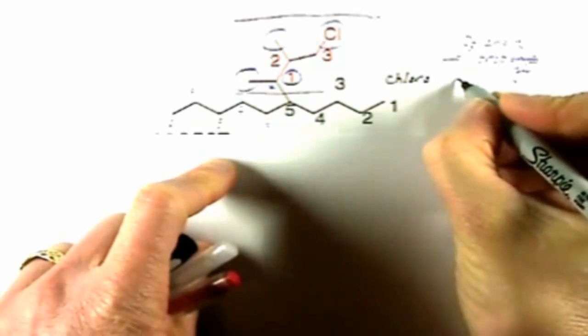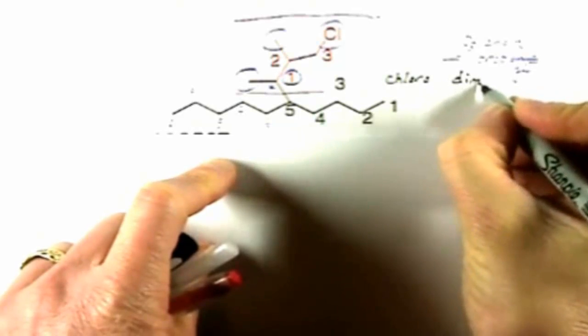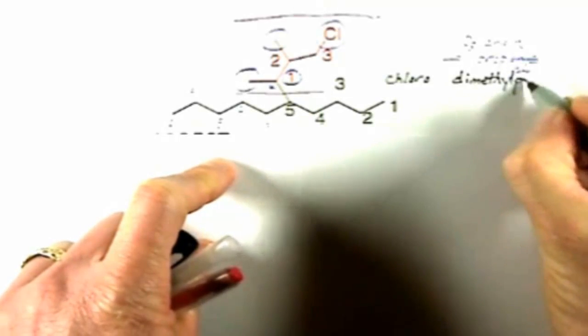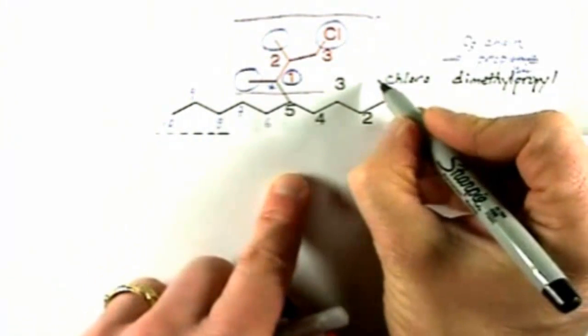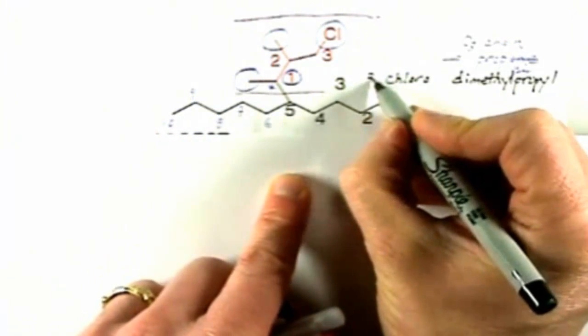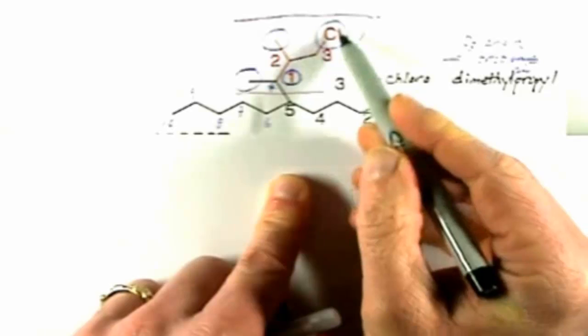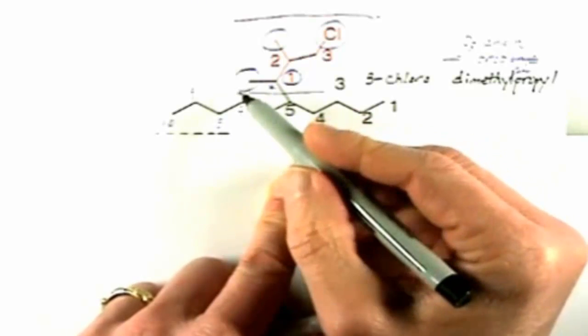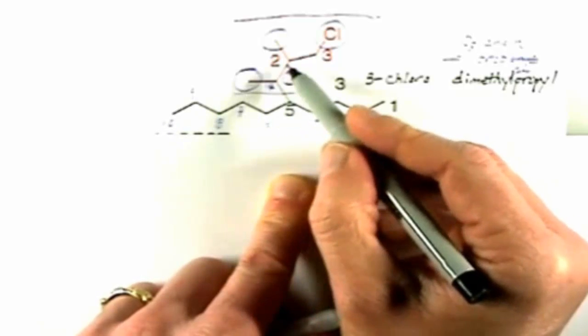So we're going to have chloro, dimethylpropyl, chloro, and then dimethylpropyl, and then we need the numbers to show where the atoms are. The chlorine here is attached to carbon three of this three carbon chain. The two methyl groups are attached to carbons one and two.